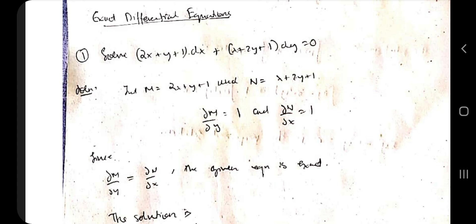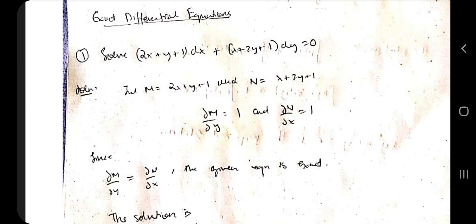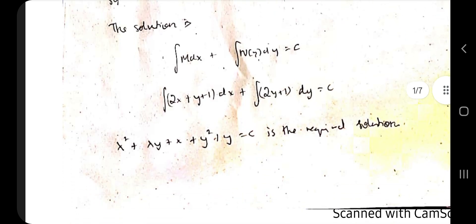After you have taken M and N, do the partial differentiation: partial differentiation of M with respect to y, and partial differentiation of N with respect to x. When you do that, you will get two answers. If they are equal, that means it is an exact differential equation.